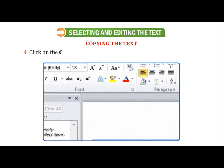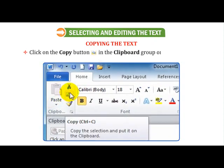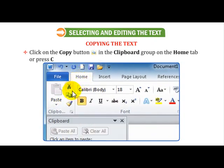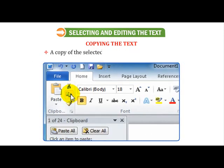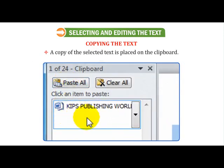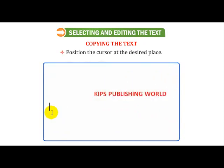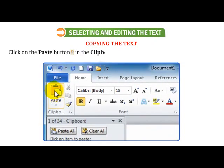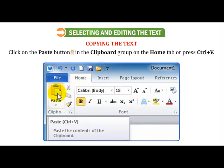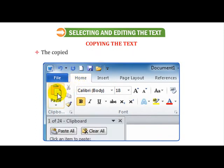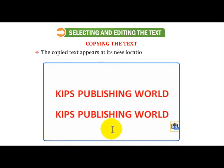Select the text you want to copy. Click on the Copy button in the Clipboard group on the Home tab, or press Ctrl+C. A copy of the selected text is placed on the clipboard. Position the cursor at the desired place. Click on the Paste button in the Clipboard group on the Home tab, or press Ctrl+V. The copied text appears at its new location in the document.